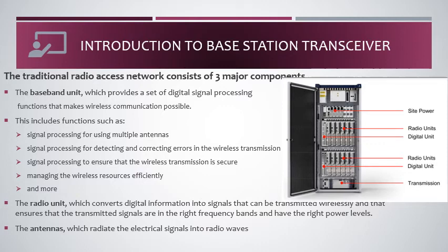Talking about the baseband unit: when the signal is converted from RF to digital by the radio unit, it is fed to the baseband unit. It performs a set of digital processing functions, processing signals coming from multiple antennas, detecting and correcting errors in wireless transmission, and ensuring transmission is secure and the wireless system is managed efficiently. Once the data is processed, it is fed to a transmission unit, which is connected through microwave link or optical link to the core network or base station controller.